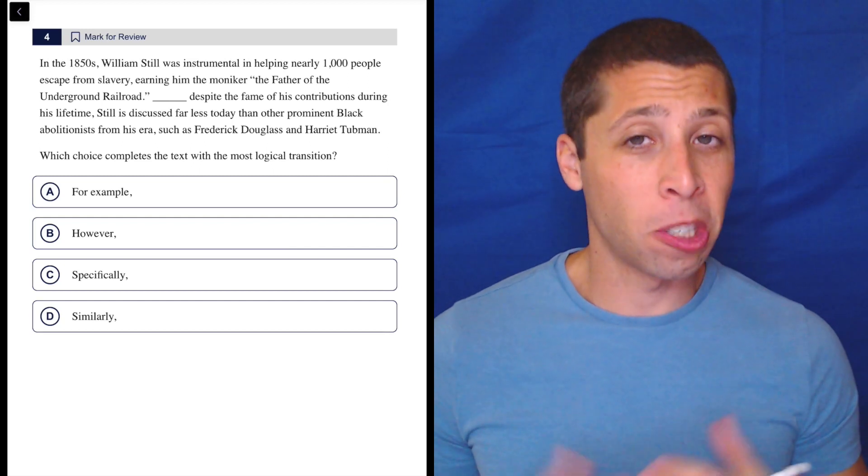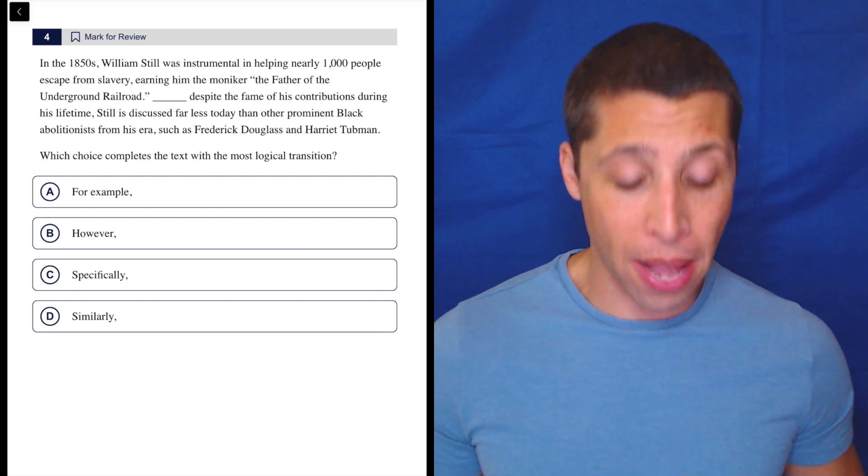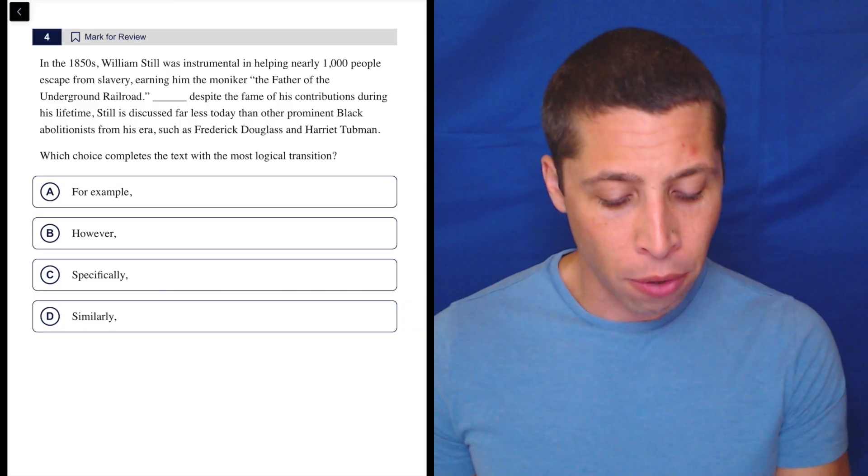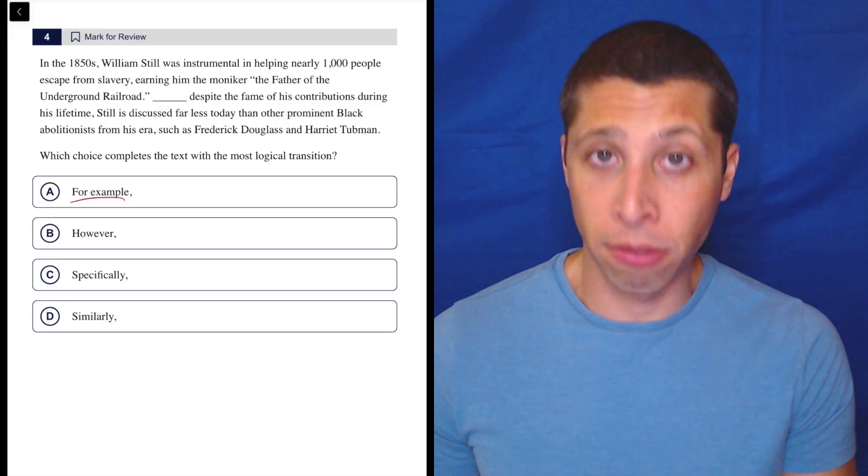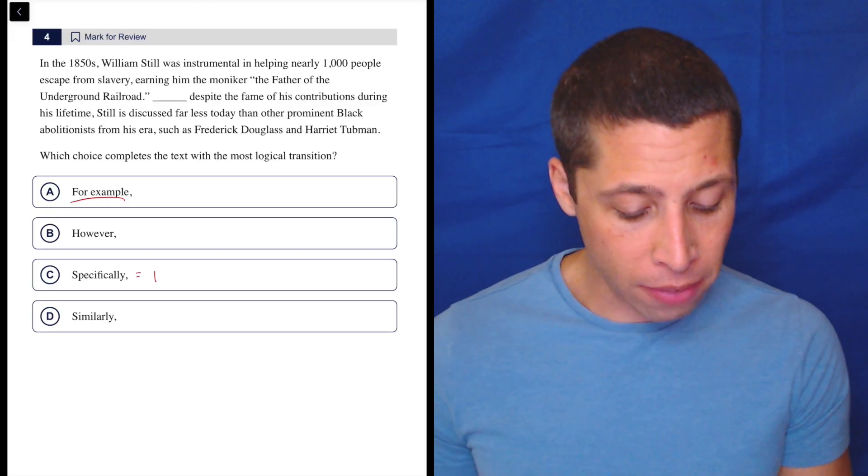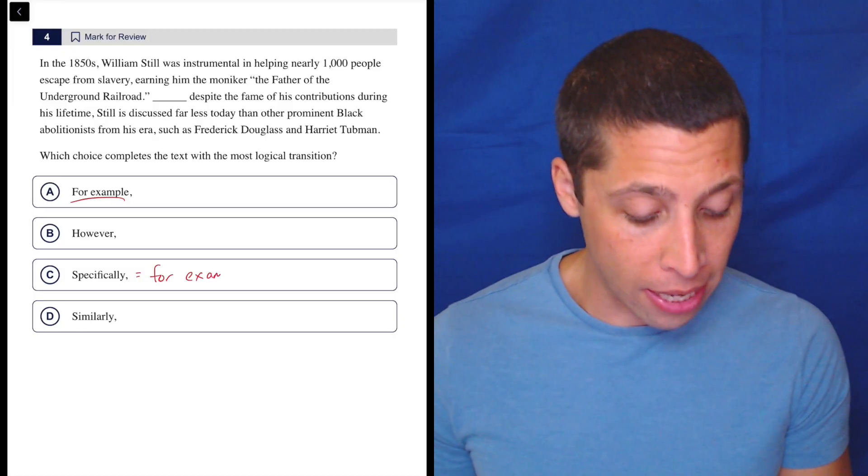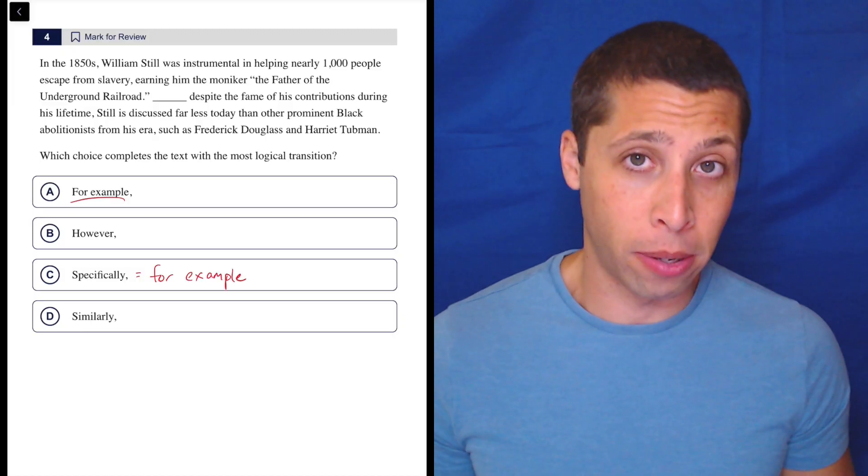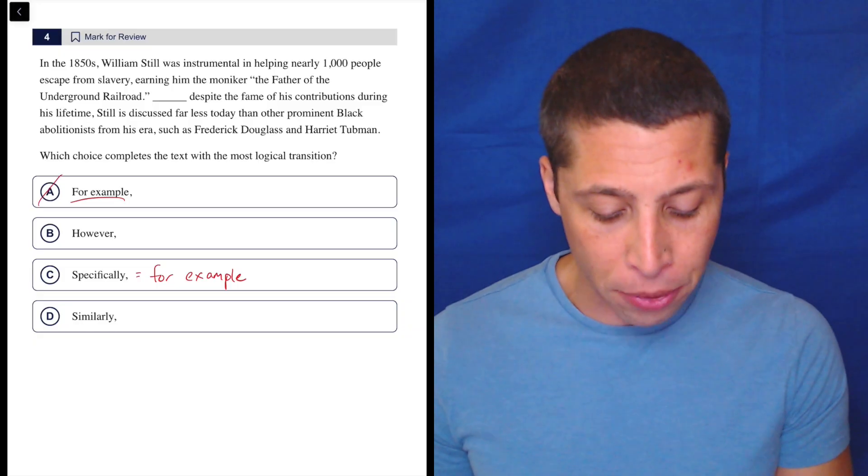I always like to glance at the answer choices before I start these just to see what's up, and sometimes there's some obvious issues. For example is one of our main transition categories, and specifically, a lot of people forget this, but specifically is another way to say for example. So already I'm deeply skeptical of A and C.